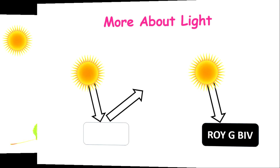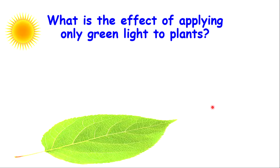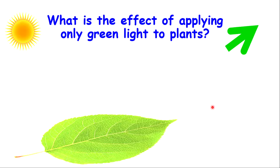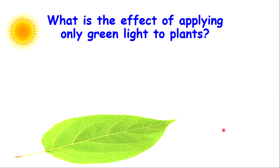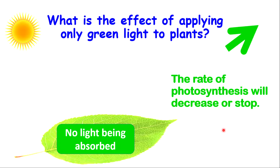Let's see how this is important for photosynthesis. Consider this question: what is the effect of applying only green light to a plant? When light enters the plant, all the green light will be reflected. Since only green light is being applied and all of it is reflected, no light will be absorbed. If there is no light being absorbed, the rate of photosynthesis will decrease or stop.